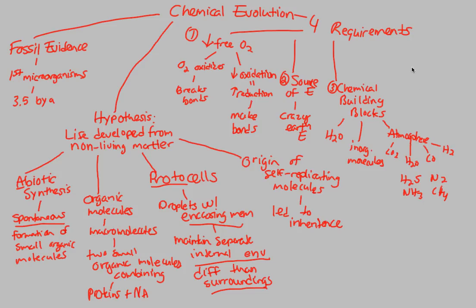The last requirement is time — millions and even billions of years for chemical evolution to happen. Evolution is not a process that happens overnight. It doesn't happen over the course of one, two, or three thousand years. It takes millions and billions of years.